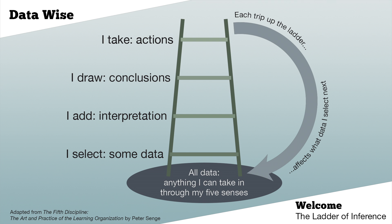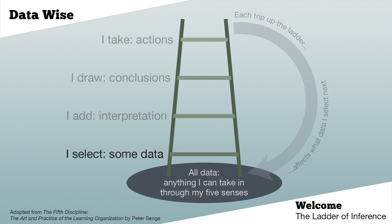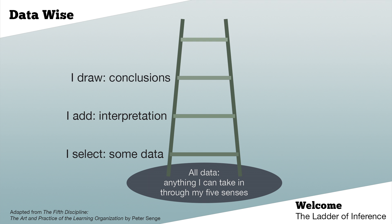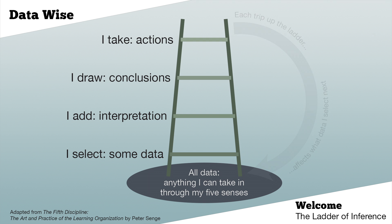The ladder of inference is a metaphor organized around how we as humans tend to make patterns about what we see in the world. Whenever I perceive something, I first select some data to focus on, then I add some interpretation, draw conclusions, and finally take actions. The actions I take then influence what kind of data I collect next, and for that reason it can be very dangerous to go up the ladder too quickly.